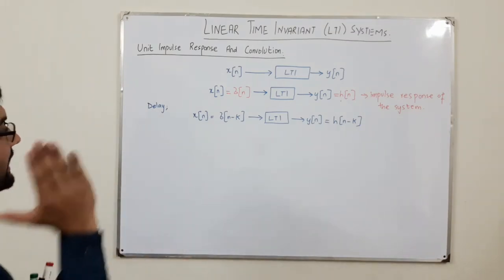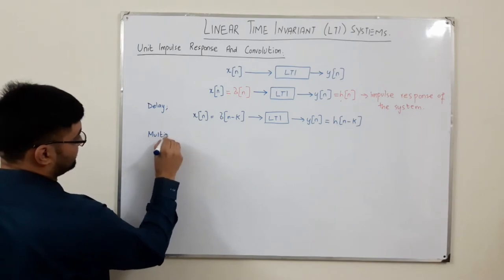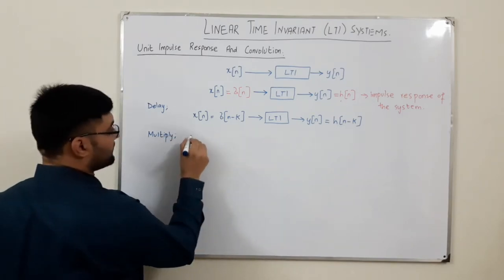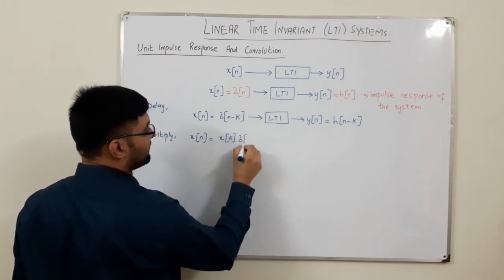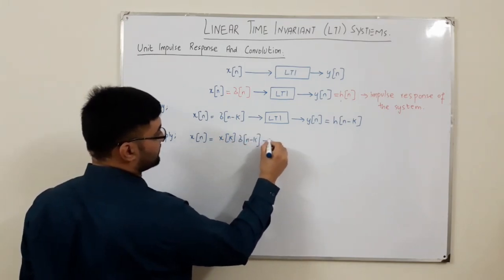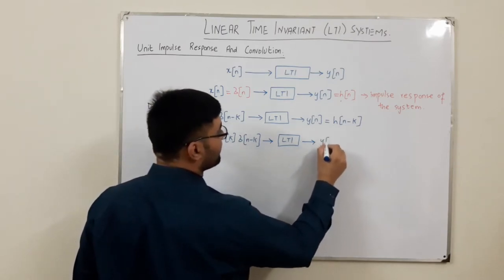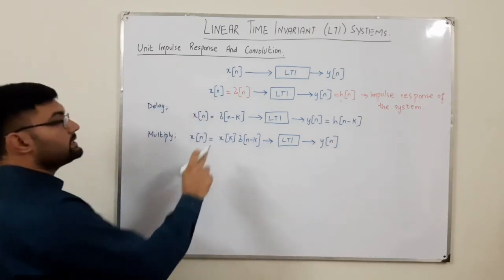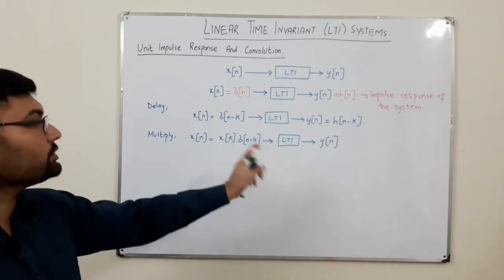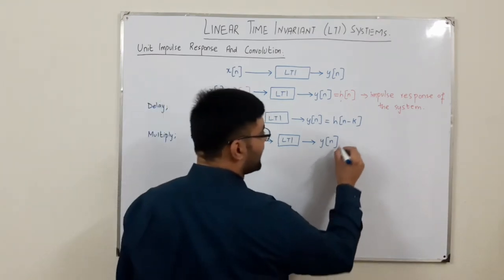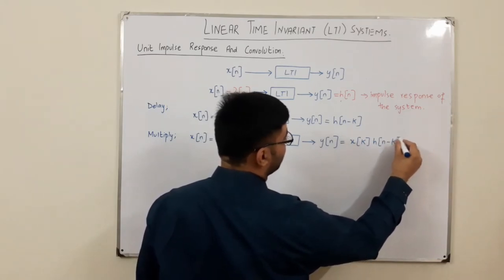Now I multiply by some factor, so that the input X of n to the system is X of k times Delta of n minus k. What would Y of n be? Since this is a linear system, it must obey the property of homogeneity: if you multiply something to the input, the output should be multiplied by that same thing. So the output would be X of k times H of n minus k.